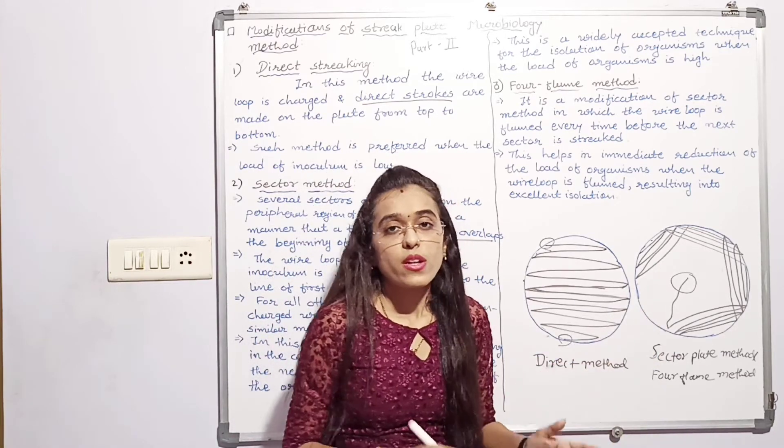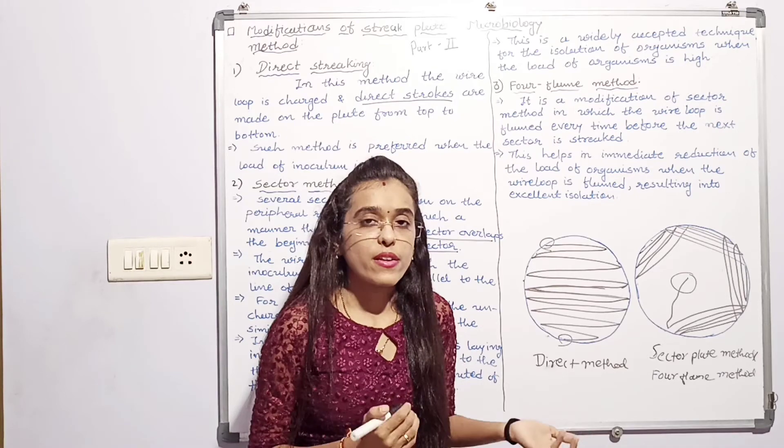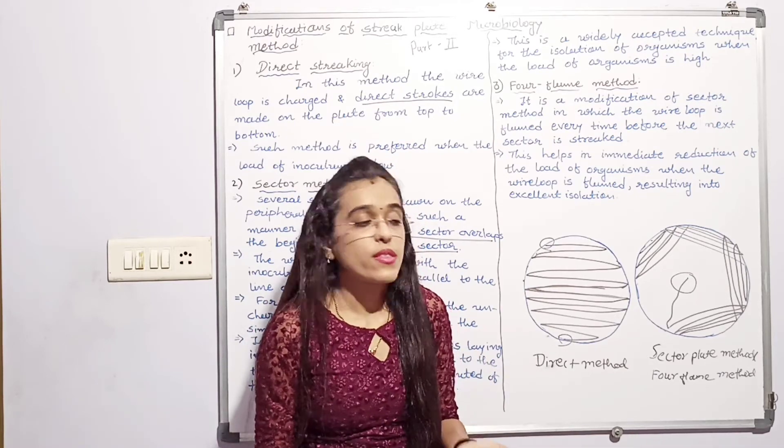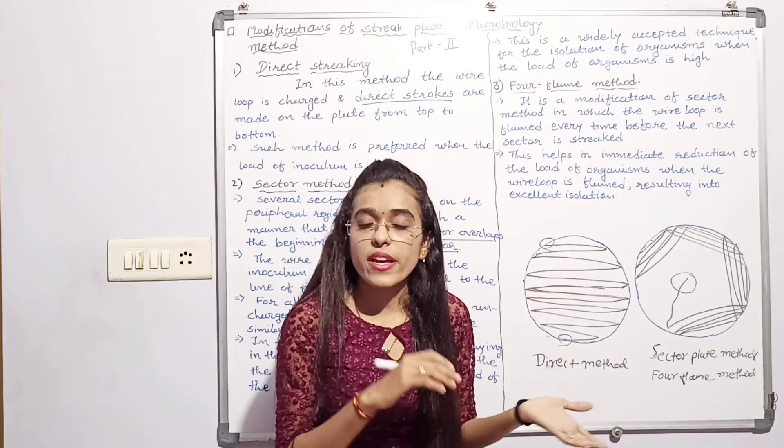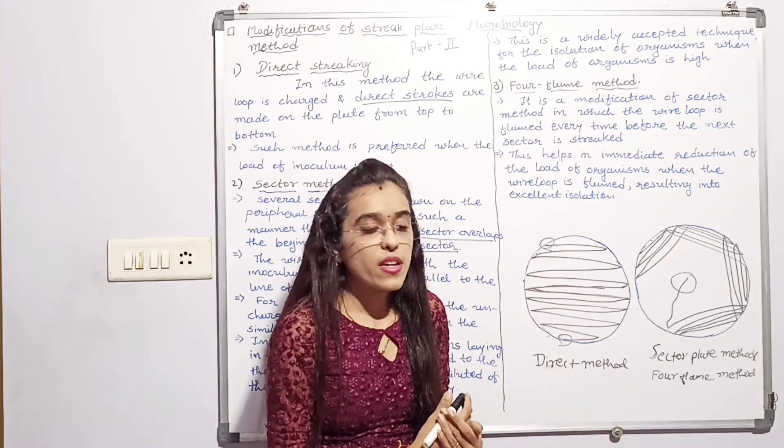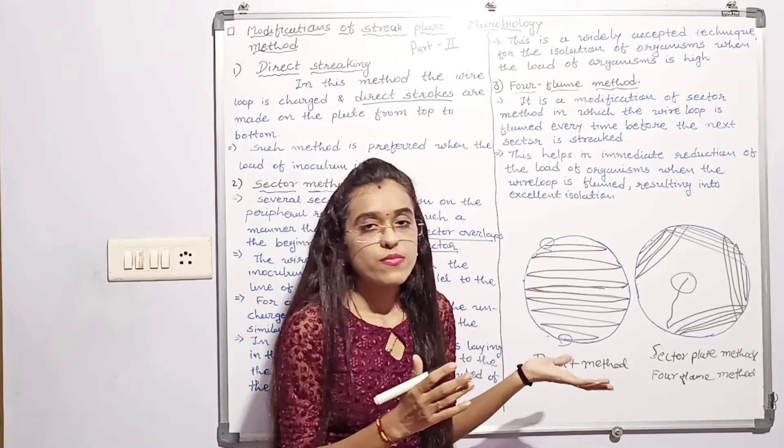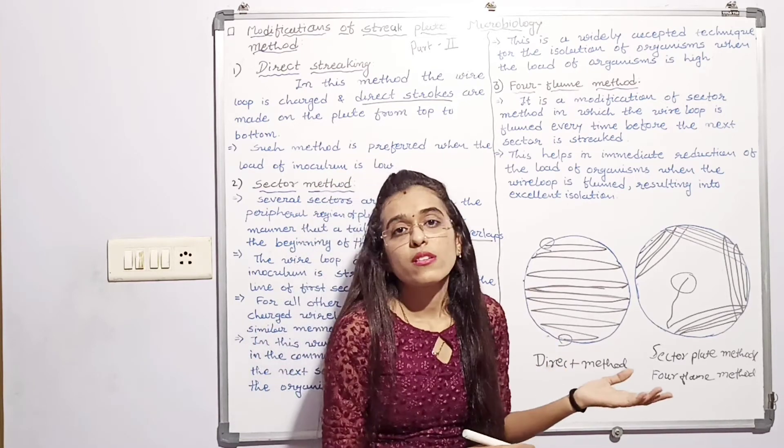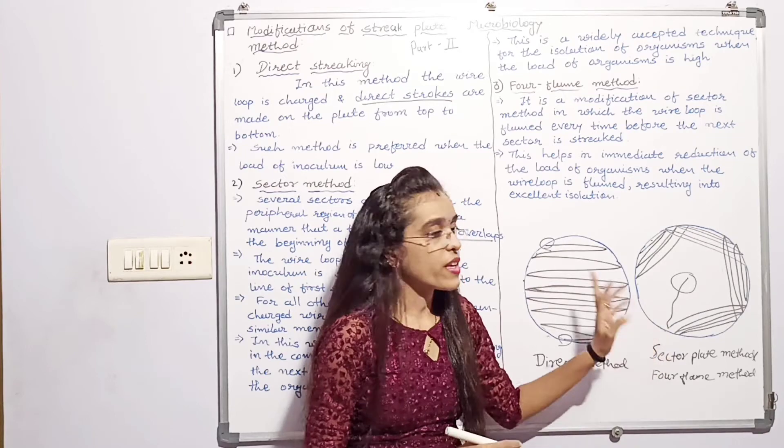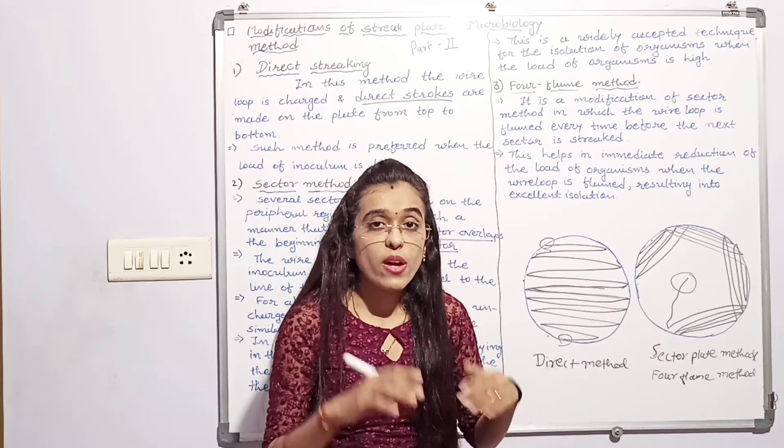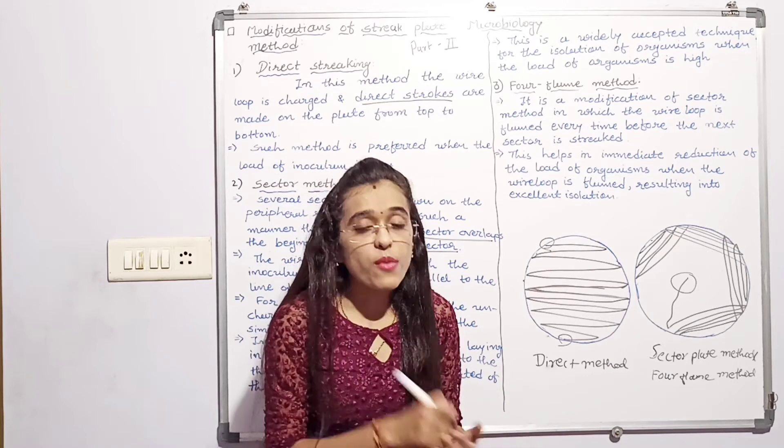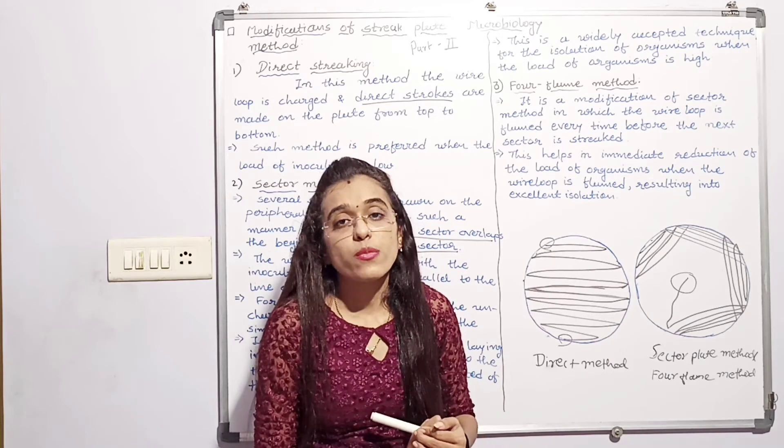Then we have to do gram staining. Pick up this colony, do gram staining on glass slide. Then confirm it which type of organism. Then write their characteristics, their motility, everything. After that again do this type of streaking. We have to confirm how we get confirmed this type of organism present in this medium.